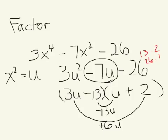So we found the factors for the substituted polynomial, which was 3U squared minus 7U minus 26. That does factor to 3U minus 13 times U plus 2.